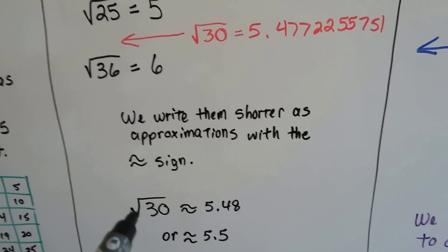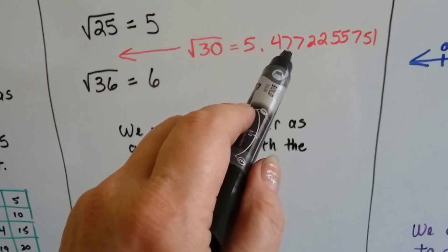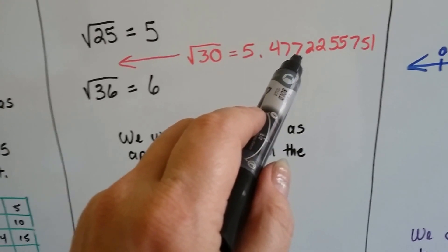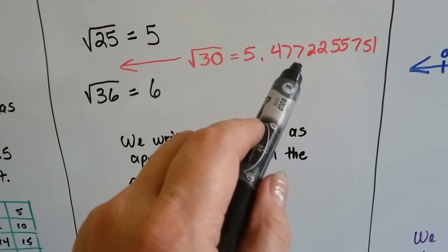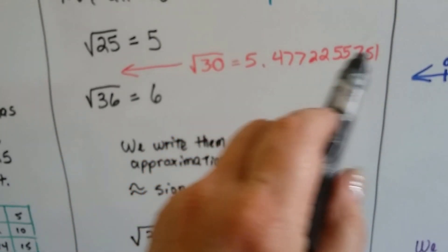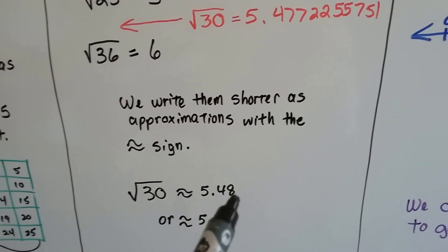And we say that the square root of 30 is approximately 5.48 because we round this off. We say the 7 is larger than 4. Remember if it's 5 or larger we round up. So it tells this 7 to turn into an 8 and then all these numbers disappear. So we end up with 5.48.